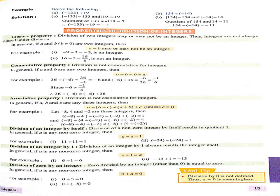Now here are two examples. One is minus 133 divided by 19. In this example, one integer is negative and other is positive, so our quotient has a negative sign. So here the answer is minus 7. Now the second part: 154 divided by minus 14. Here also one integer is negative and other is positive, so our quotient is also negative. So the answer is minus 11, मतलब minus 11।